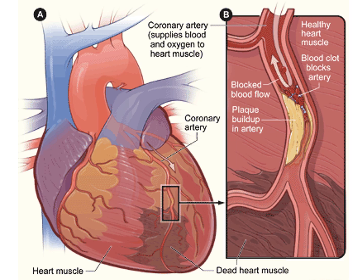In a heart attack, there's a blockage in the coronary artery. Over time, fatty plaques build up through atherosclerosis. These plaques can rupture, causing a blood clot to form over the ruptured area, which completely blocks blood flow through that coronary artery. Whatever part of the heart muscle is on the other side receives no blood flow and no oxygen, and those heart cells die. That's what happens in a heart attack.